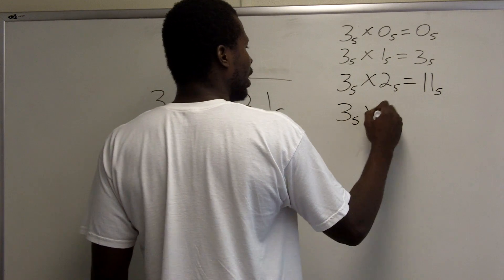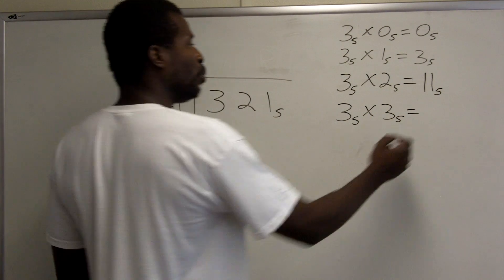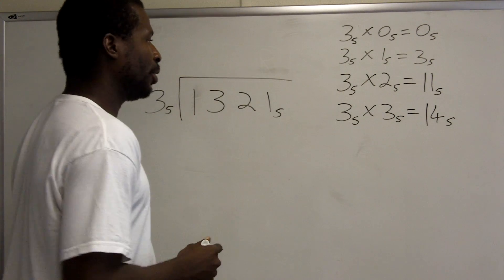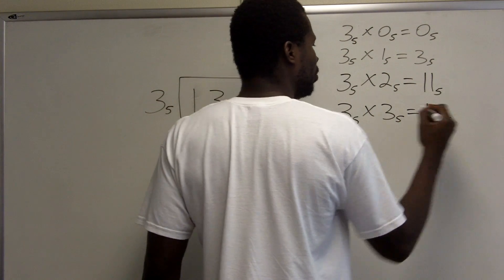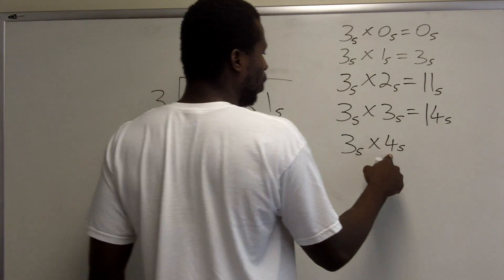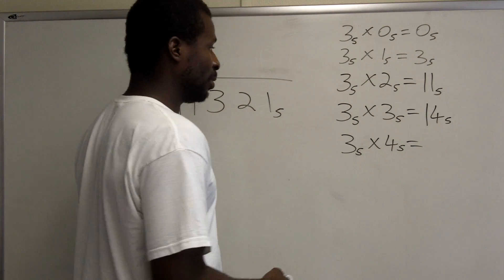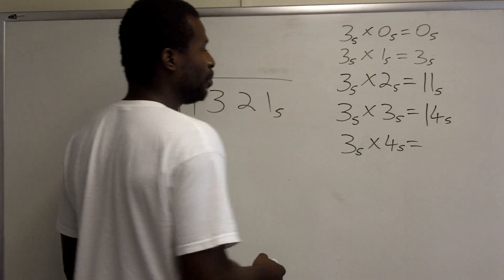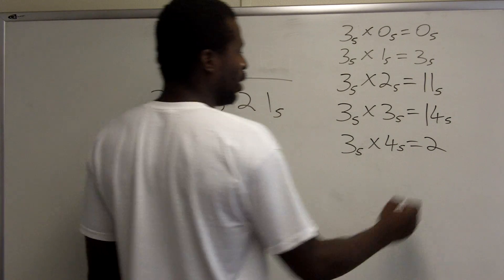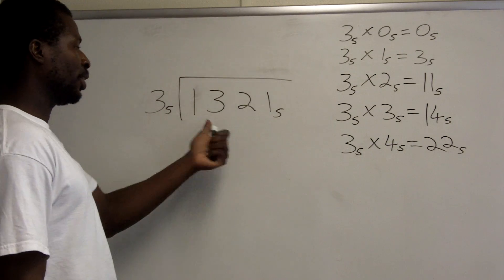3 base 5 times 3 base 5: that's 9 in base 10. There is 1 group of 5 in 9 with remainder 4, so 9 base 10 is 14 base 5. And 3 base 5 times 4 base 5 — you only go up to 1 less than the base — that's 12 in base 10. There are 2 groups of 5 in 12 with remainder 2, so 12 base 10 is 22 base 5. That's what I need in order to do this division.